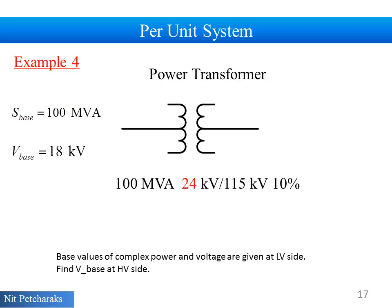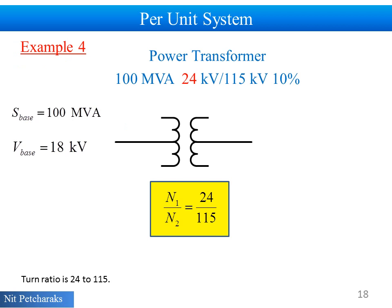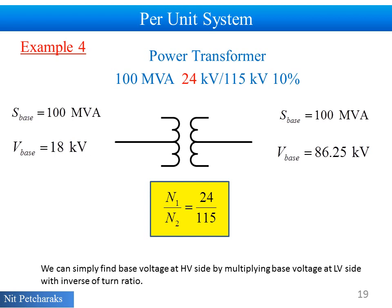Example 4: base values of complex power and voltage are given at low voltage side. Find base voltage at high voltage side. Turn ratio is 24 to 115. We can also simply find base voltage at low voltage side by multiplying base voltage at low voltage side with inverse of turn ratio.